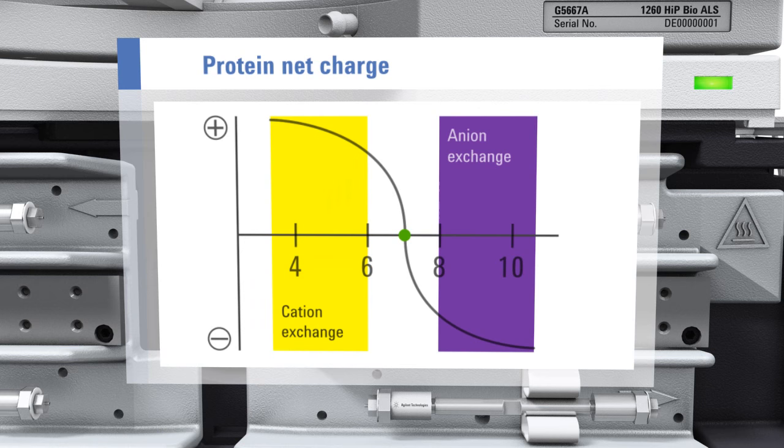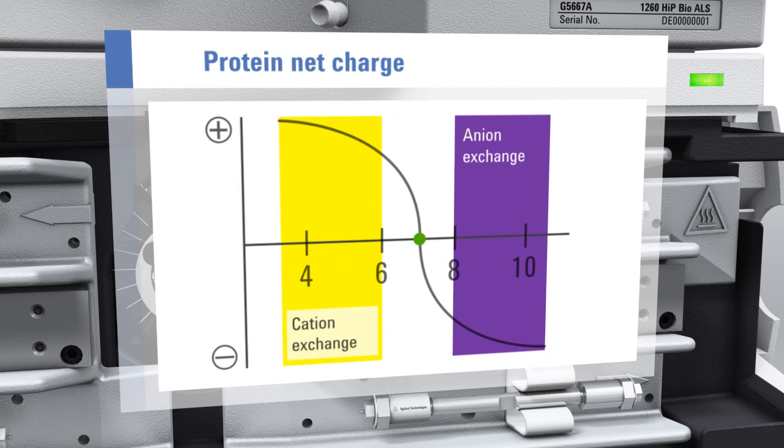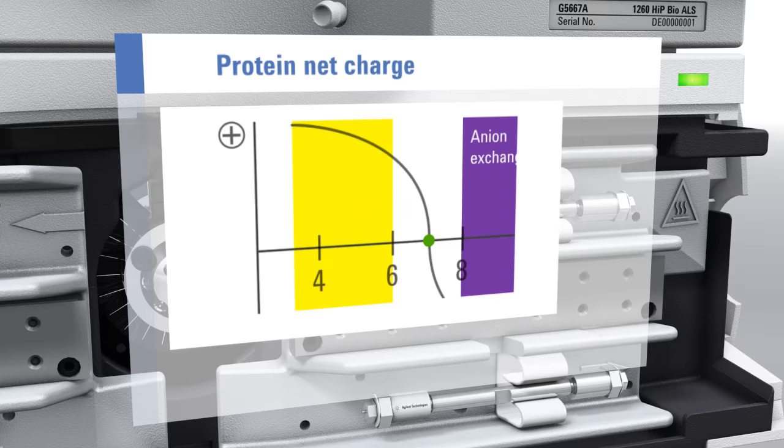This phenomenon is utilized by ion exchange chromatography to separate charged species. In a low pH buffer where the protein's surface charge is positive, a cation exchanger with a negatively charged solid support is used for separation.